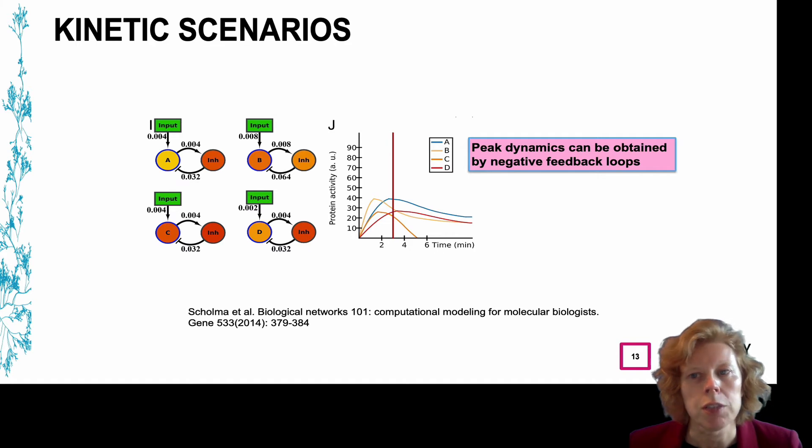In biology, we often observe peak dynamics by which the maximum activity is reached a certain time after signal stimulation. In Animo, a node stays active unless you actively inhibit its activity. This is a huge difference with, for example, a boolean model where a node is inactive unless it's activated. In Animo, a node retains its activity unless it's inhibited or turned off.